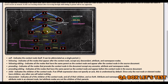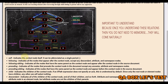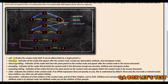This is our context node and we can also call it 'self'. Self indicates the context node itself and can be abbreviated as a single period. The next is 'following', which indicates all the nodes that appear after the context node — except any descendant, attribute, and namespace nodes. We're going to see examples and things will become clearer.